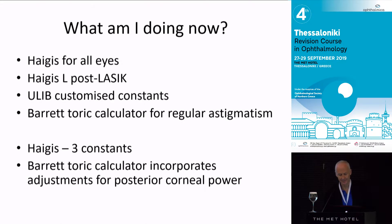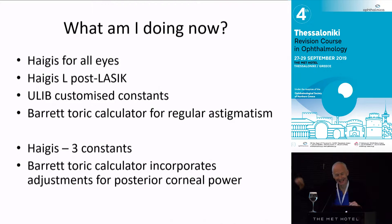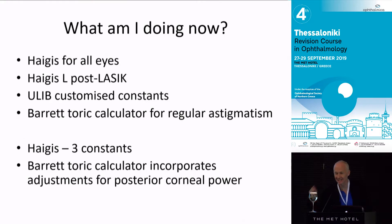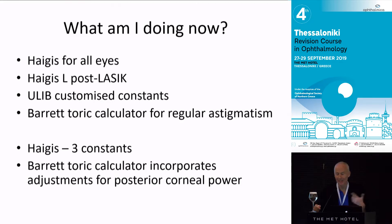The trouble with second generation formulas is that they move the power curve for a lens up and down, assuming it is the same shape for lenses throughout the axial length range. That actually isn't true. Wolfgang Haigis worked that out. Rather than giving a single A constant, he has three constants that modify the shape of the curve as you go through the range. So now I'm using the Haigis formula.